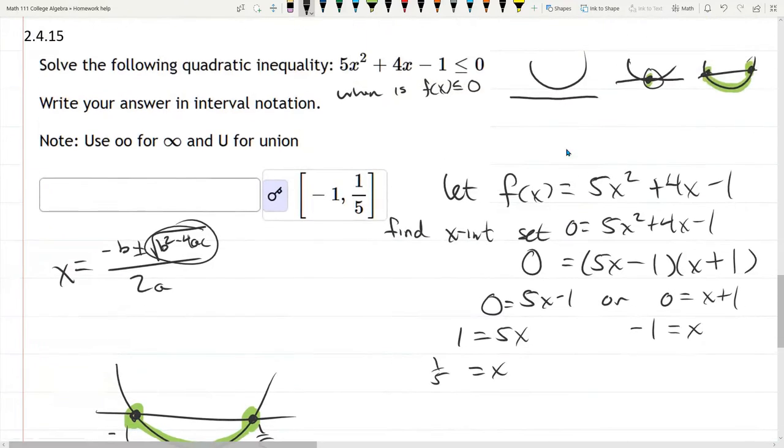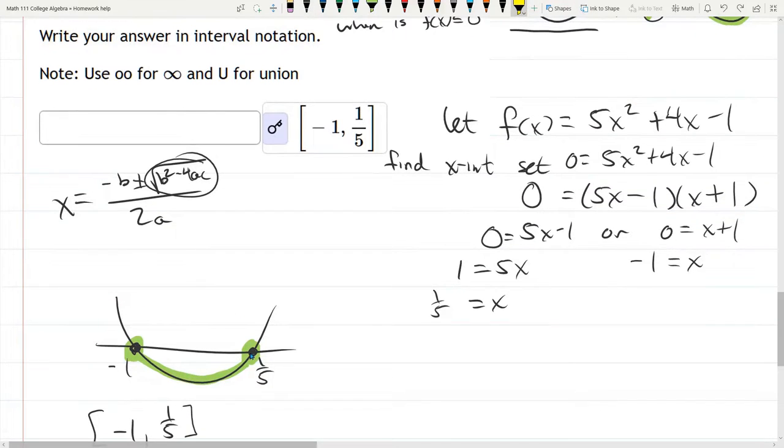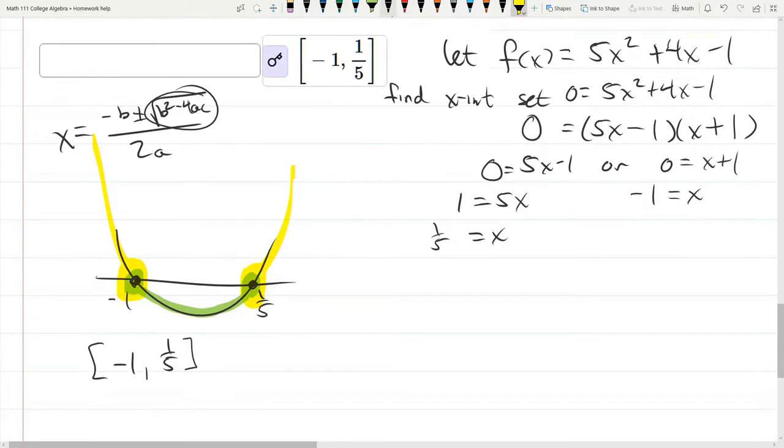Now, you may be wondering what would have happened if it was positive. If the inequality sign flipped, I'll do this in yellow, I would describe the above the x-axis parts of the graph. And I'll keep with a different color. What I just highlighted would be negative infinity, negative 1, if it's okay to equal 0, union, 1 fifth comma infinity.